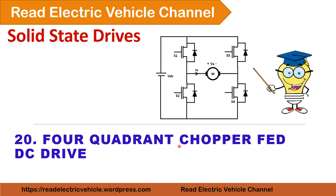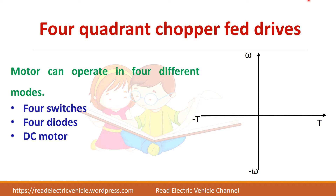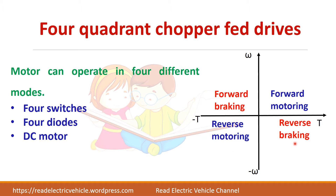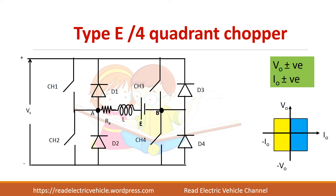In this video, let us see about the four-quadrant chopper fed DC drive. The motor can operate in all four quadrants: forward motoring, forward braking, reverse motoring, and reverse braking. For this operation you need four switches, four diodes, and a DC motor. The four-quadrant chopper consists of four switches CH1, CH2, CH3, and CH4, each with an anti-parallel diode forming a switch-diode combination.